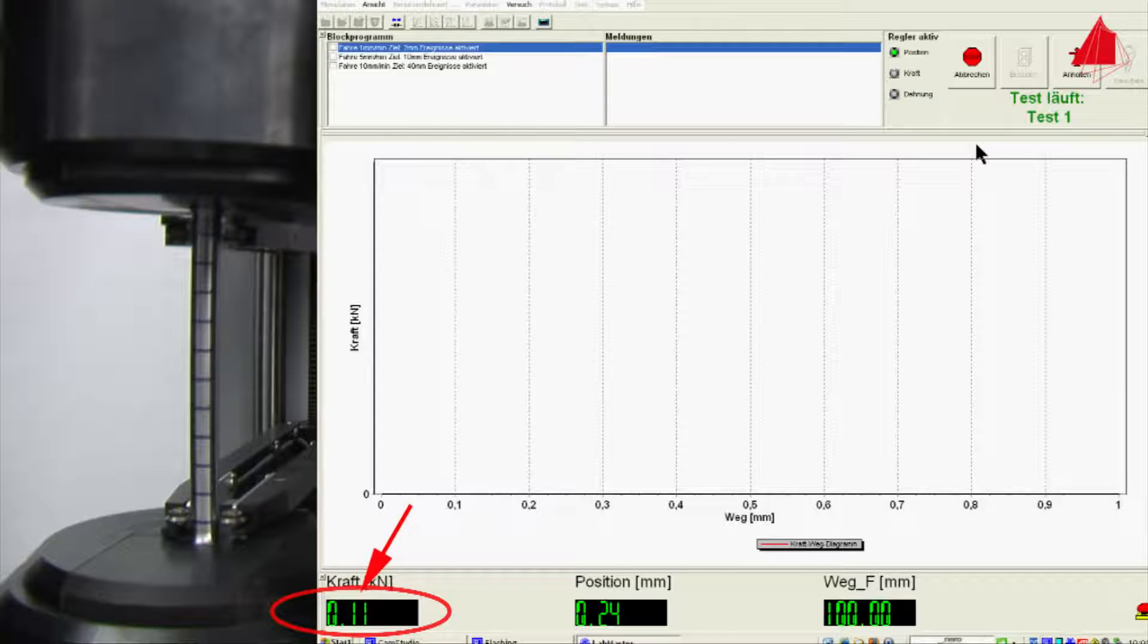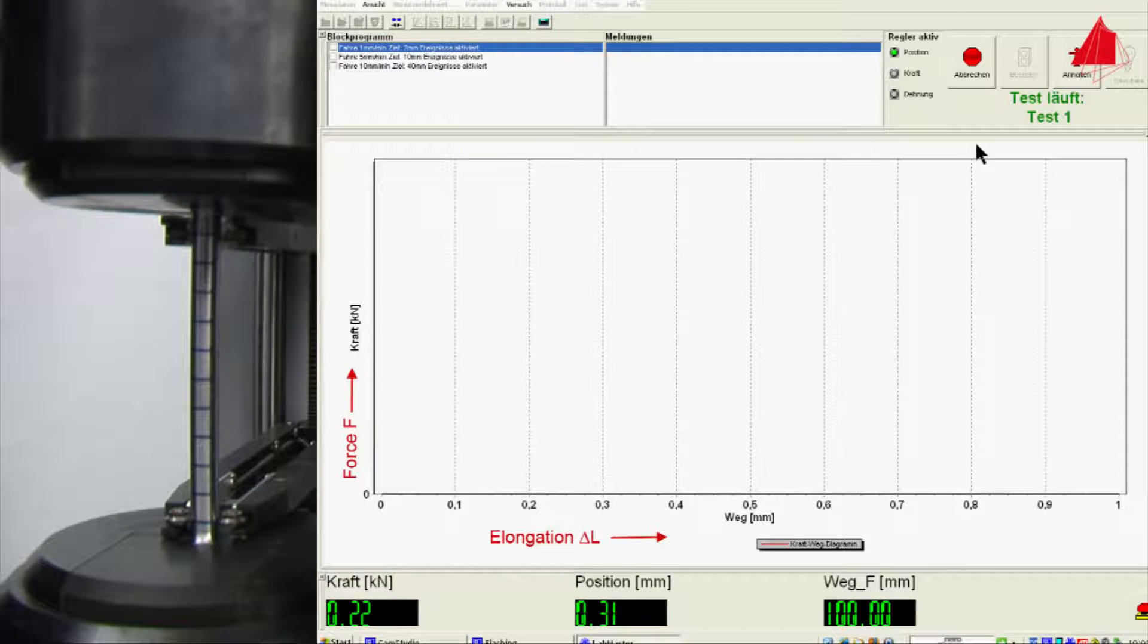The material behavior can best be observed in a force elongation diagram. The force F is being plotted upwards on the vertical axis, the elongation delta L towards the right on the horizontal axis.